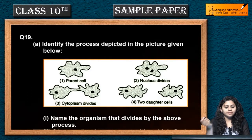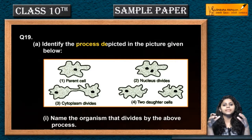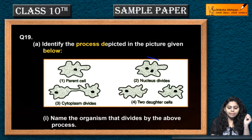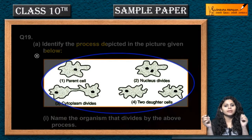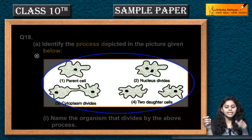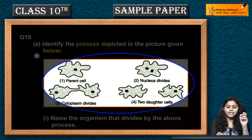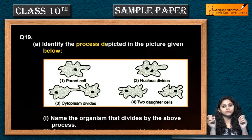Question number 19: Identify the process depicted in the picture given below. The picture tells us what the process is. The first parent cell's nucleus divides, then the cytoplasm divides, and two daughter cells are produced.